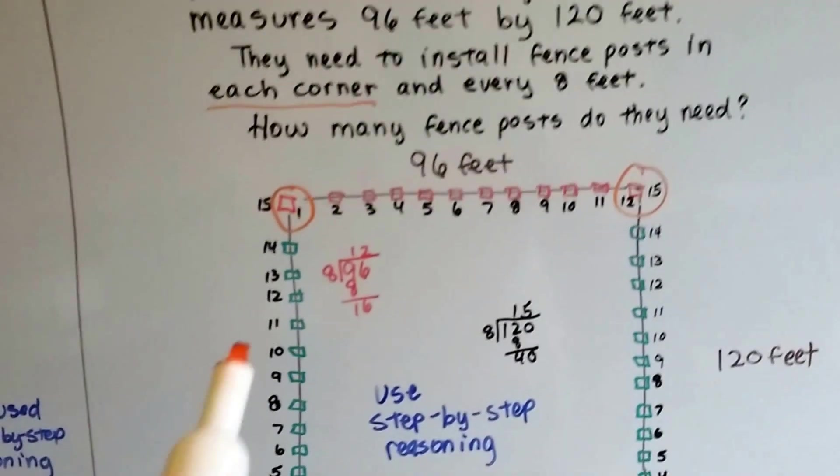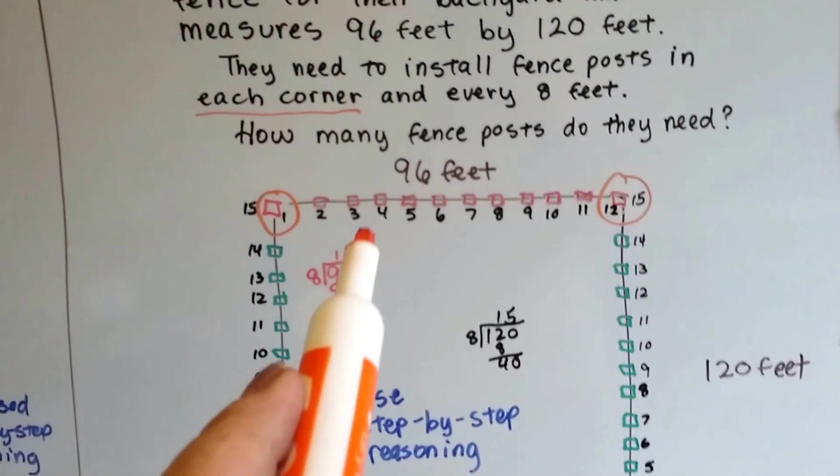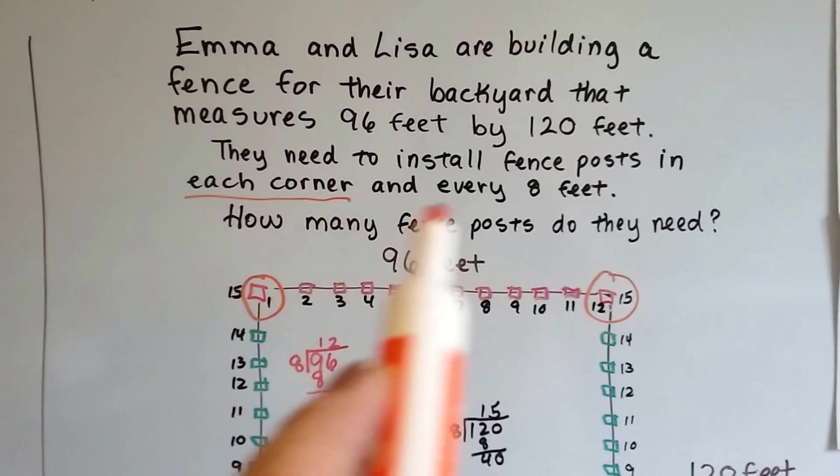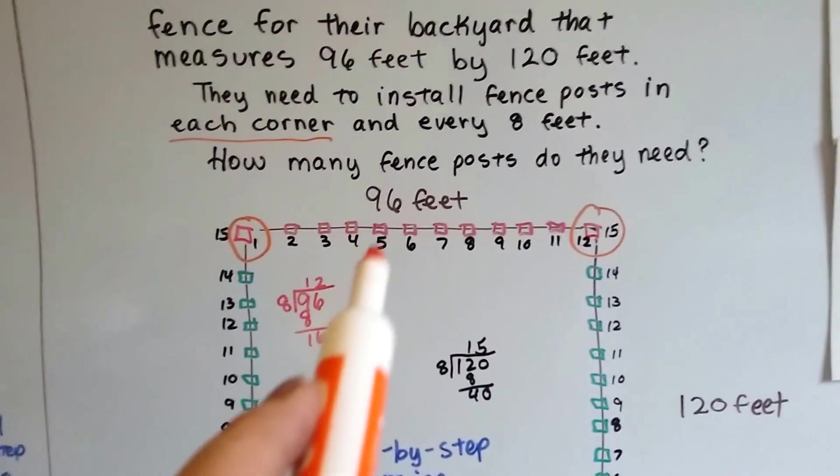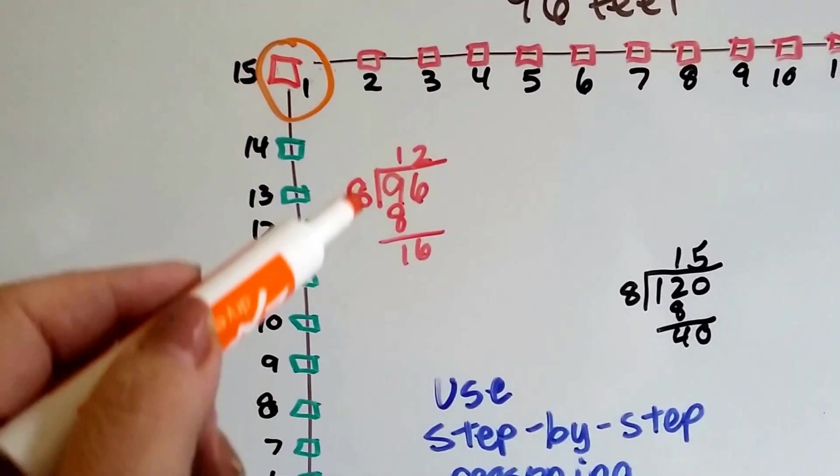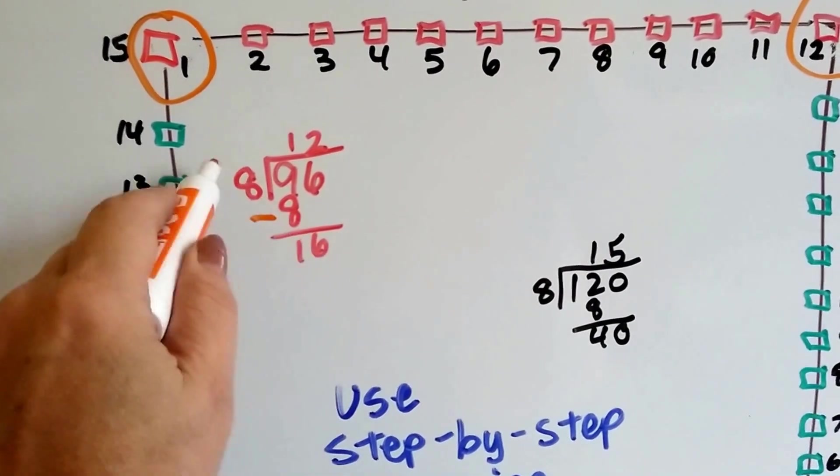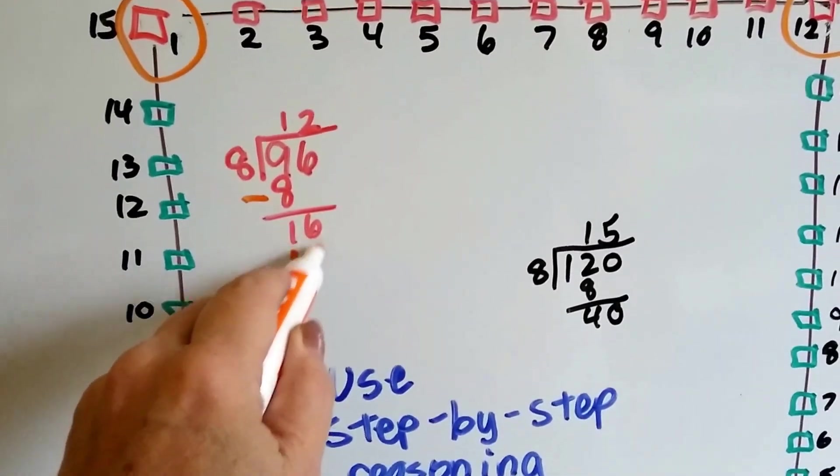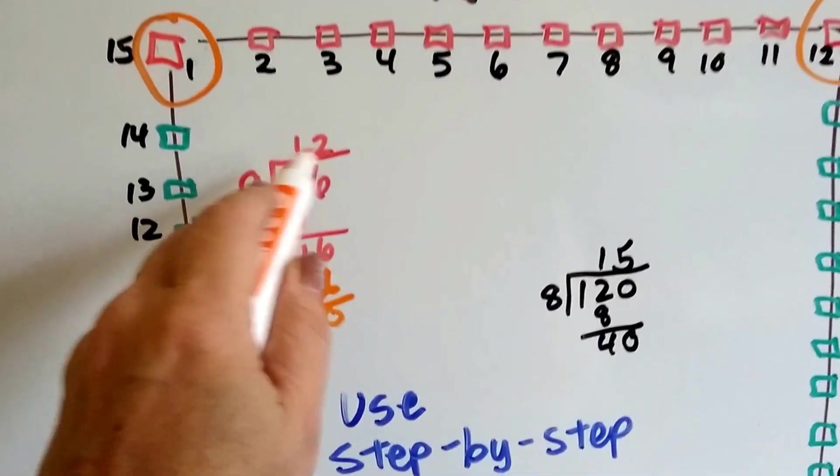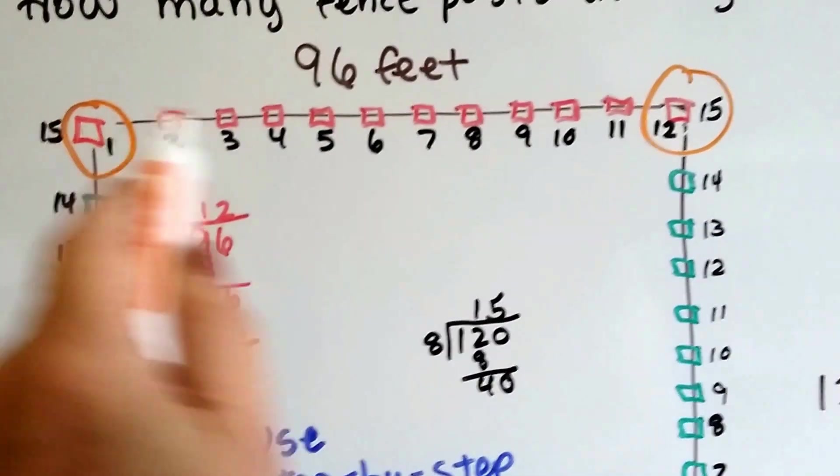And I said, okay, well, if this is ninety-six feet across and they need a fence post every eight feet, what I did was, I divided ninety-six by eight. And eight goes into nine one time. I did my subtraction and I got one. I dropped the six down. Eight goes into sixteen two times. I got my zero remainder. So, it's twelve. So, I know I needed twelve fence posts along this line.